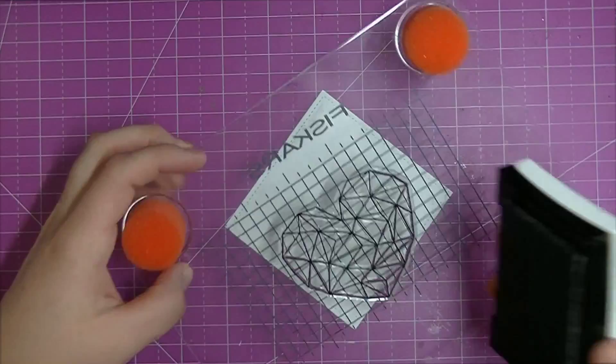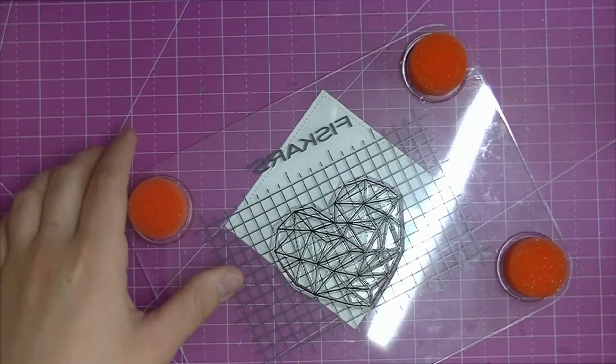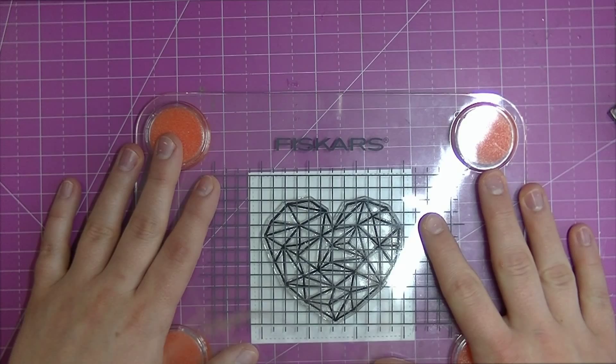I put it on my Fiskars Compact stamp press, prepared the watercolor paper with my EK Success Powder Tool and stamped that with VersaFine Onyx Black ink because I'm going to be doing some heat embossing.